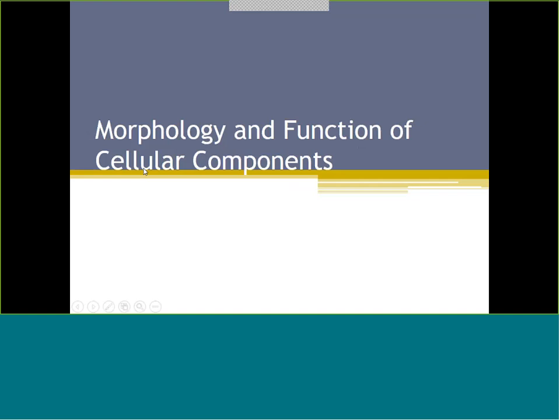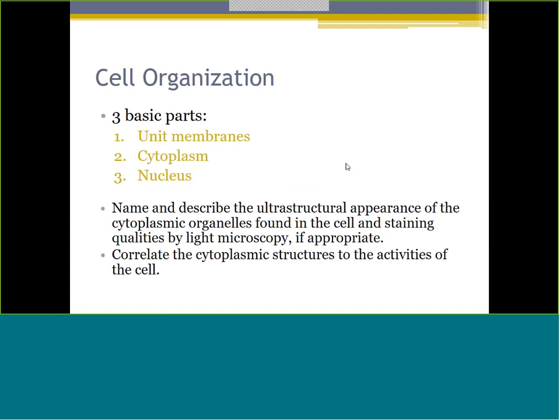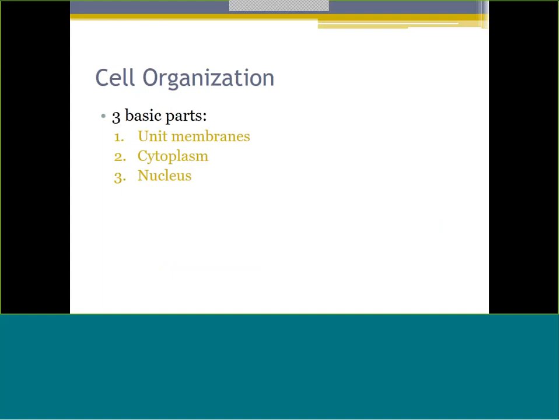This chapter is all about the function and morphology of cellular components. Hopefully this is a review from anatomy and physiology or biology class, but it is still important to remember our basic elements of a cell. Cells overall are organized into three parts: unit membranes, cytoplasm, and nucleus. I don't read the objective slide to you - it's always there if you want to know what you're supposed to get from each chapter.